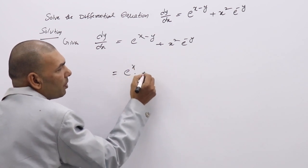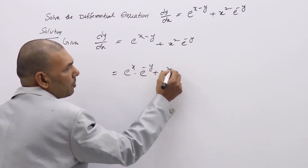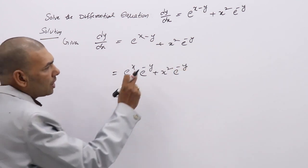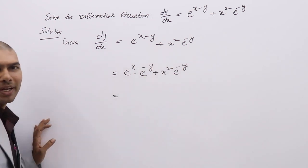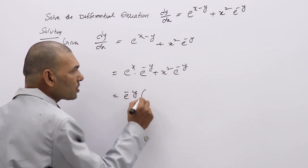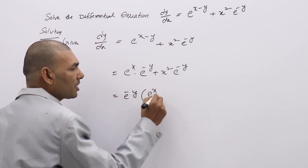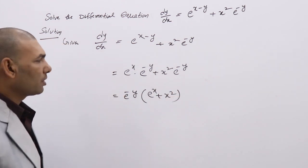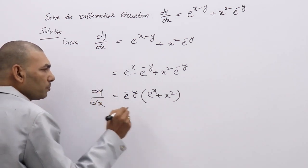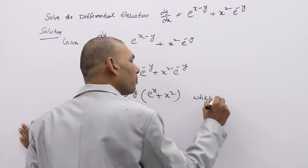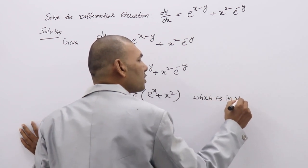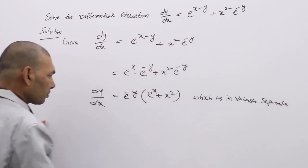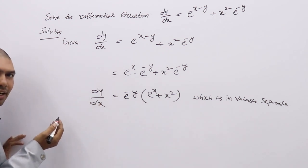So, dy/dx = eˣ · e⁻ʸ + x²e⁻ʸ. Now you have a clear idea — e⁻ʸ is common. We can take e⁻ʸ as a common factor. If you take e⁻ʸ common, then you will have x terms separately, and y terms can be separated. This is in variable separable form.